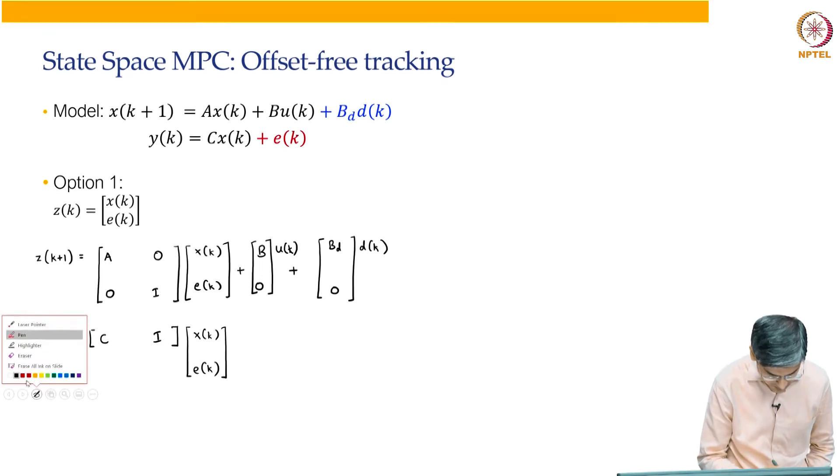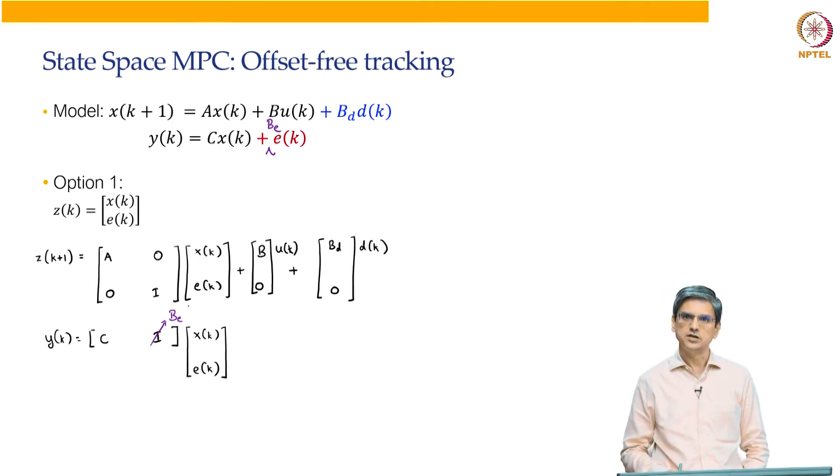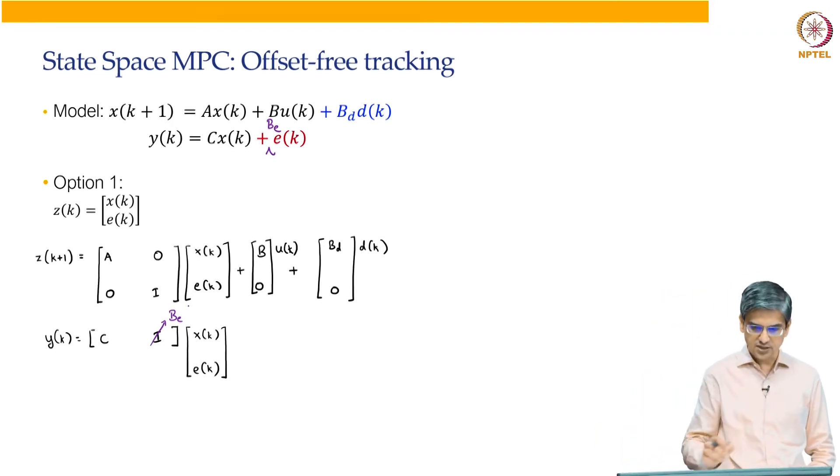There is one more possibility that you can do that instead of making this I multiplied by Ek, you can also make this as let us say De multiplied by Ek. And if you are using De multiplied by Ek, this will just get replaced by De. Both these options are available. There is no particular reason that E needs to be I multiplied by Ek. It can be some constant De multiplied by Ek also.